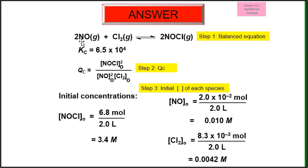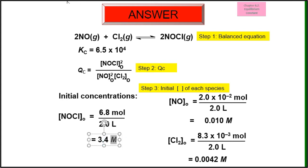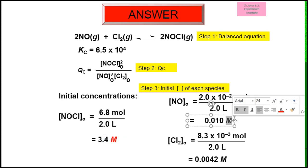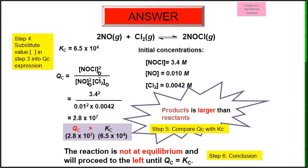Step 1: write down the balanced equation. Step 2: Kc is given, so write down the Qc expression — this is the initial concentration of product NOCl to the power of 2, over concentration of NO to the power of 2 times concentration of Cl₂. Step 3: before substitution, since concentration is not given directly, use the formula moles divided by volume to calculate the concentration of each species. These are the concentrations for each species. Don't forget to include the unit — molar.